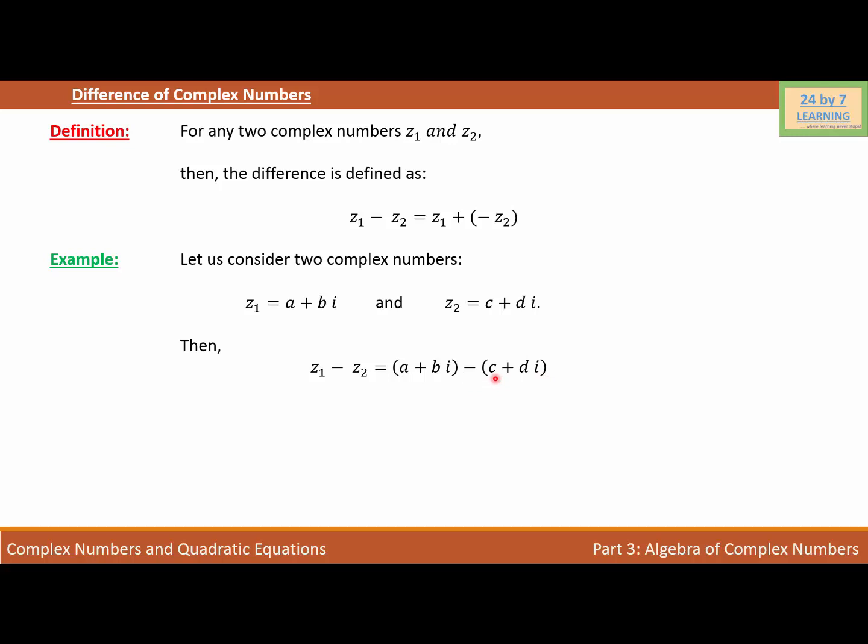If we find the difference, what we will do is subtract the real part from the real part and the imaginary part from the imaginary part. So if we do that, we will write z1 minus z2 equals a minus c plus i times b minus d. And this is how we find the difference between two complex numbers.